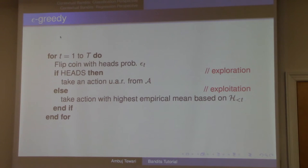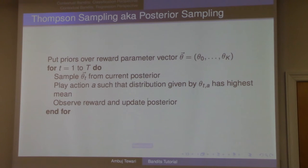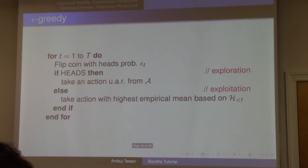So you have a sequence εₜ, usually this goes to zero. This is the probability that you will explore. So as time goes on you want to reduce the amount of exploration you do. At time t you flip a coin with heads probability εₜ. If it comes up heads, I'll choose an action uniformly at random from my action space. That's exploration. Otherwise, I'll stick with the action with the highest empirical mean. Often called epsilon-greedy in the RL literature.